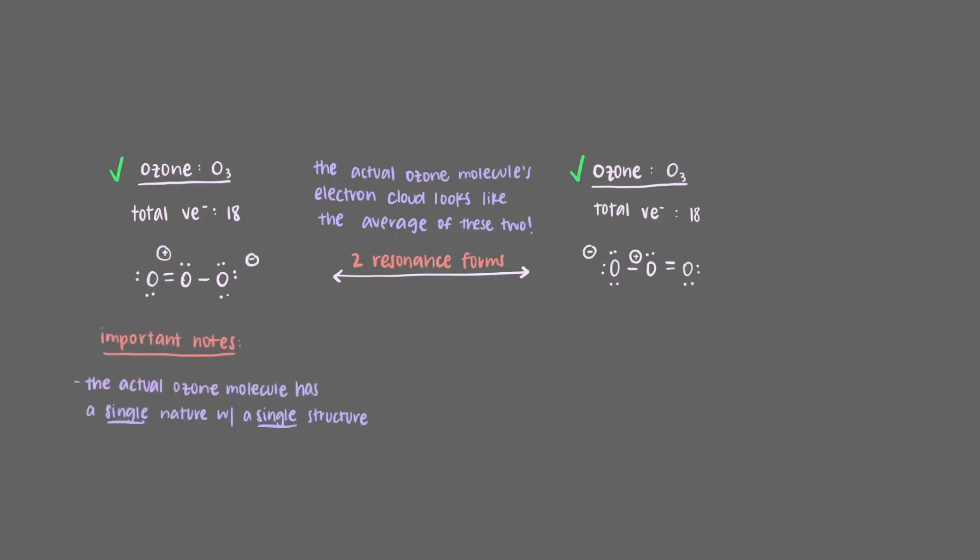It's important to note, however, that the actual ozone molecule has a single nature with a single structure, and neither of these two forms ever exists at any point in time. In other words, it's not going back and forth between the two forms. The ozone molecule really is something that looks like the average of the two at all times.